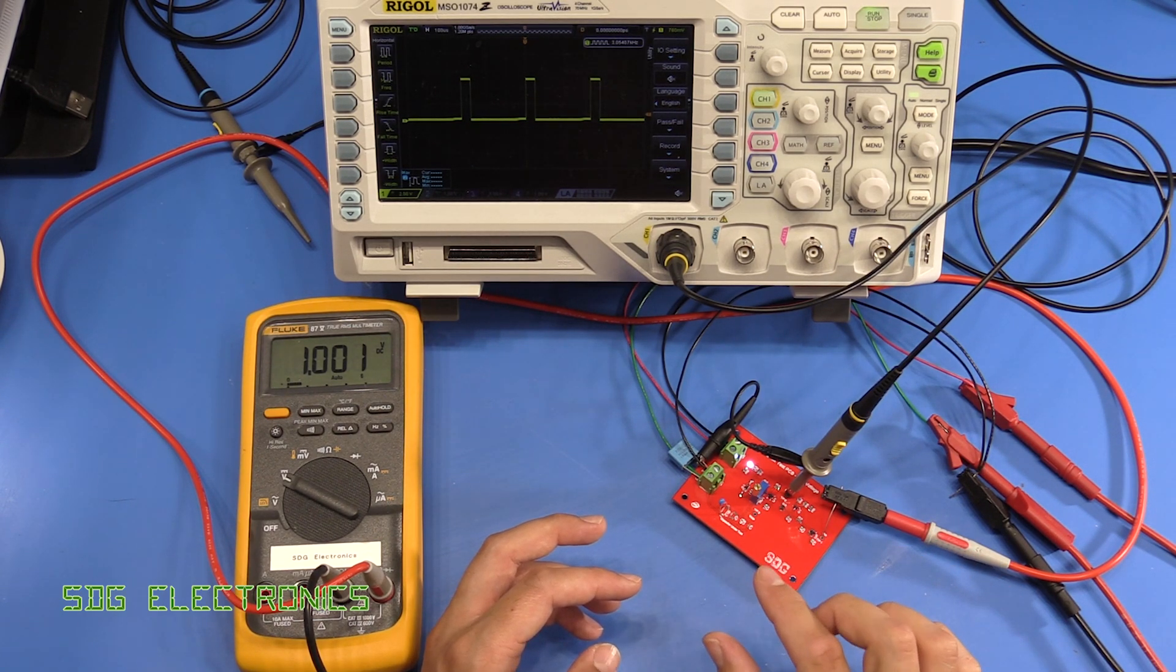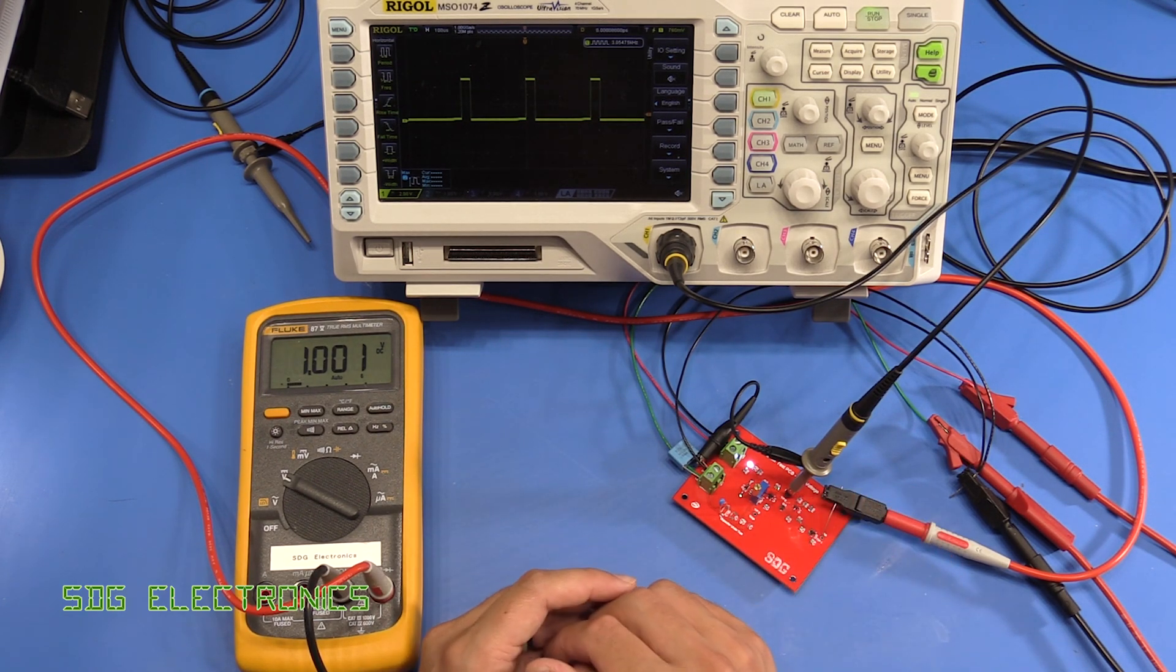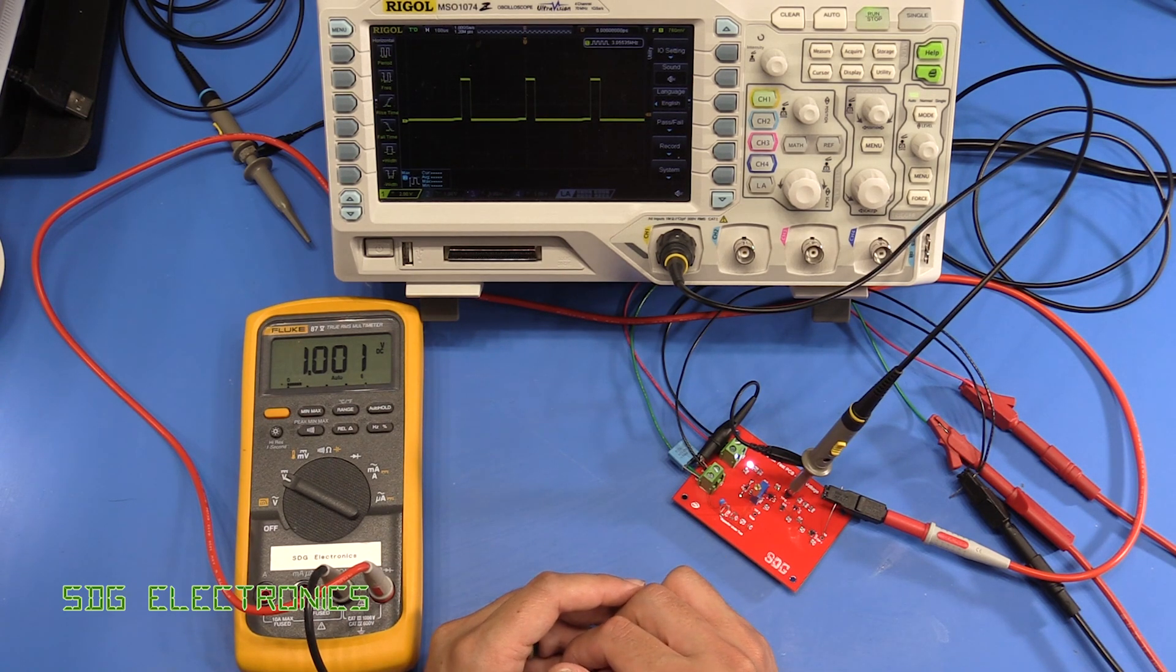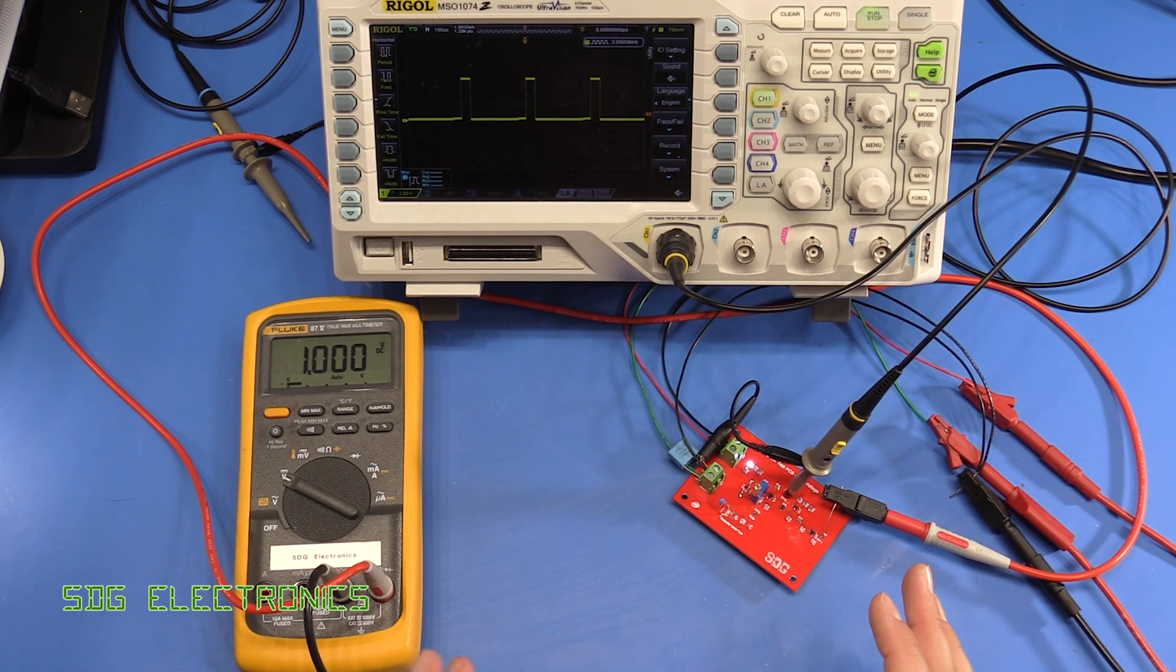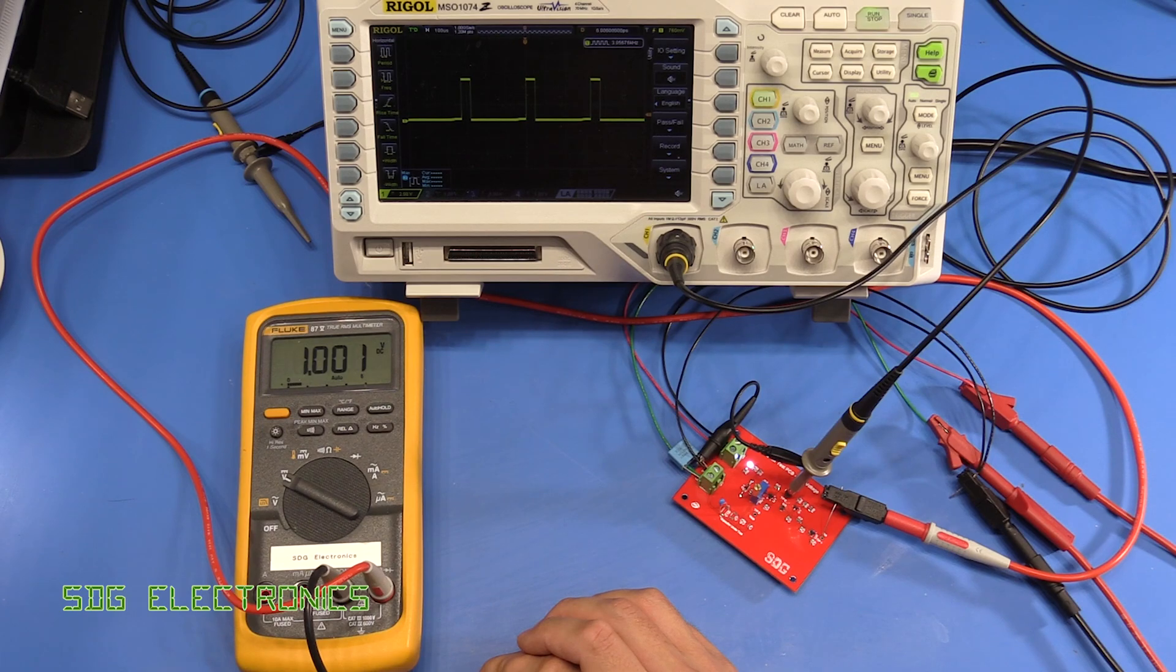This is particularly class 2 capacitors, so things like X7R, Y5V, those type of dielectric material ceramic capacitors. And what I've done is I've built up a little circuit so that we can have a look at the effect and how different ceramic capacitors are affected in different ways.